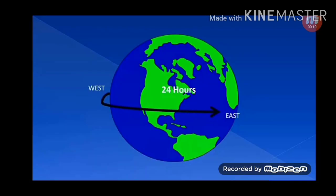It takes 24 hours for the earth to rotate around itself. It rotates from west to east. The earth's rotation has enabled us to measure time in terms of days. During a single day, we experience different stages like sunrise, midday, and sunset, as well as daytime and night time.